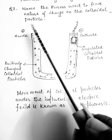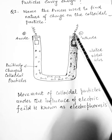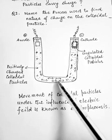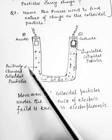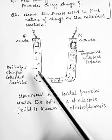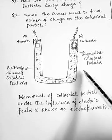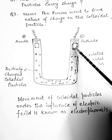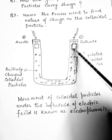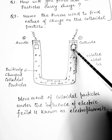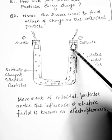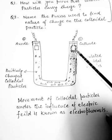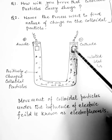We apply a potential difference across the two electrodes and observe that the colloidal particles begin to move. Since we have taken positively charged ferric hydroxide sol, the ferric hydroxide colloidal particles move towards the cathode — the negatively charged electrode — where they lose their charge and get coagulated.